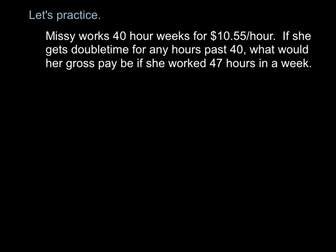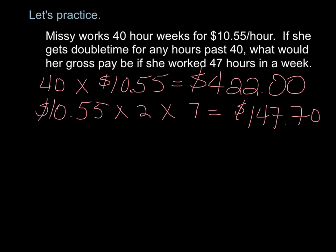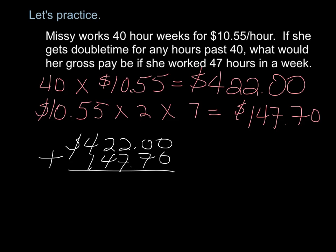Let's practice. Missy works 40-hour weeks for $10.55 an hour. If she gets double time for any hours past 40, what would her gross pay be if she worked 47 hours in a week? 40 times $10.55 gives $422.00. $10.55 times 2 times 7 overtime hours is $147.70. Add those two numbers together and her total gross pay with double time overtime would be $569.70 for that week.